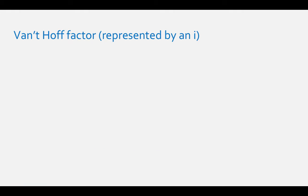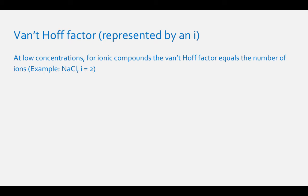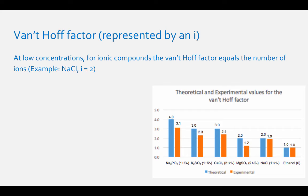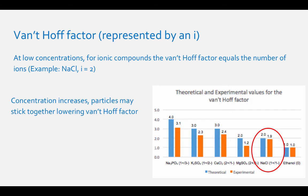Another aspect of colligative properties is how many solute particles are dissolved in the solvent. In the case of ionic solids such as NaCl, there are two particles: one Na⁺ ion and one Cl⁻ ion. Both must be accounted for using the Van't Hoff factor. The Van't Hoff factor for NaCl is 2.0 at low dilutions of less than 0.01 molal. At higher concentrations, some ions may stick together, lowering the Van't Hoff factor. The Van't Hoff factor moves farther from ideal the larger the charges on the ions. For molecular compounds such as ethanol or sugar, the Van't Hoff factor is 1.0 because they do not dissociate in water.